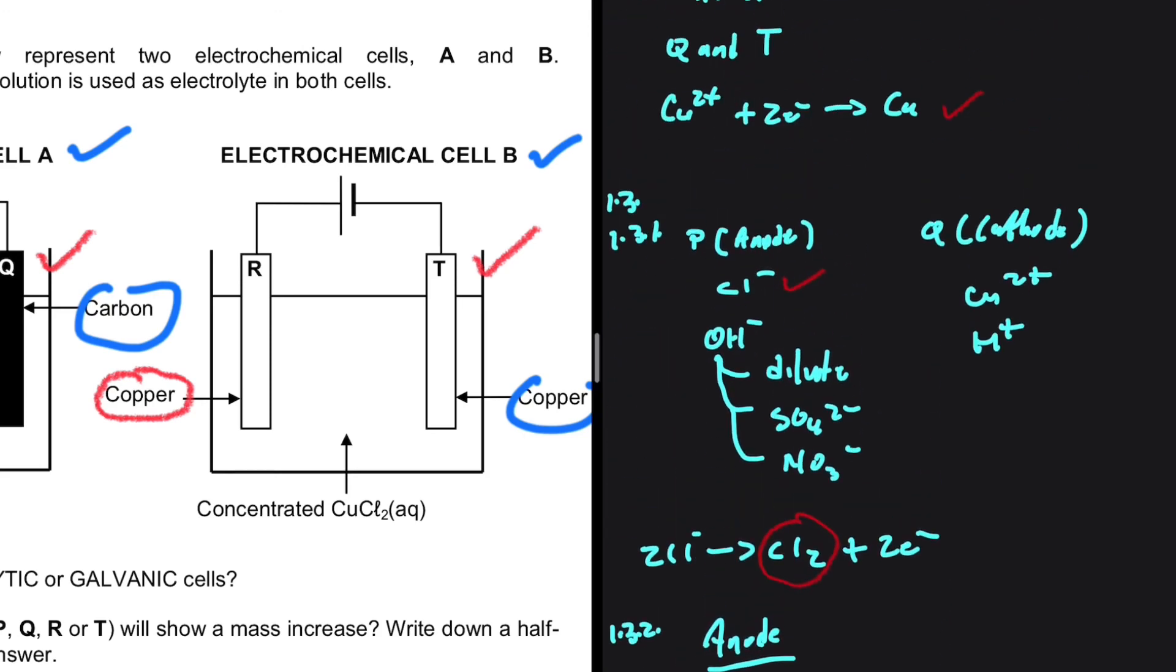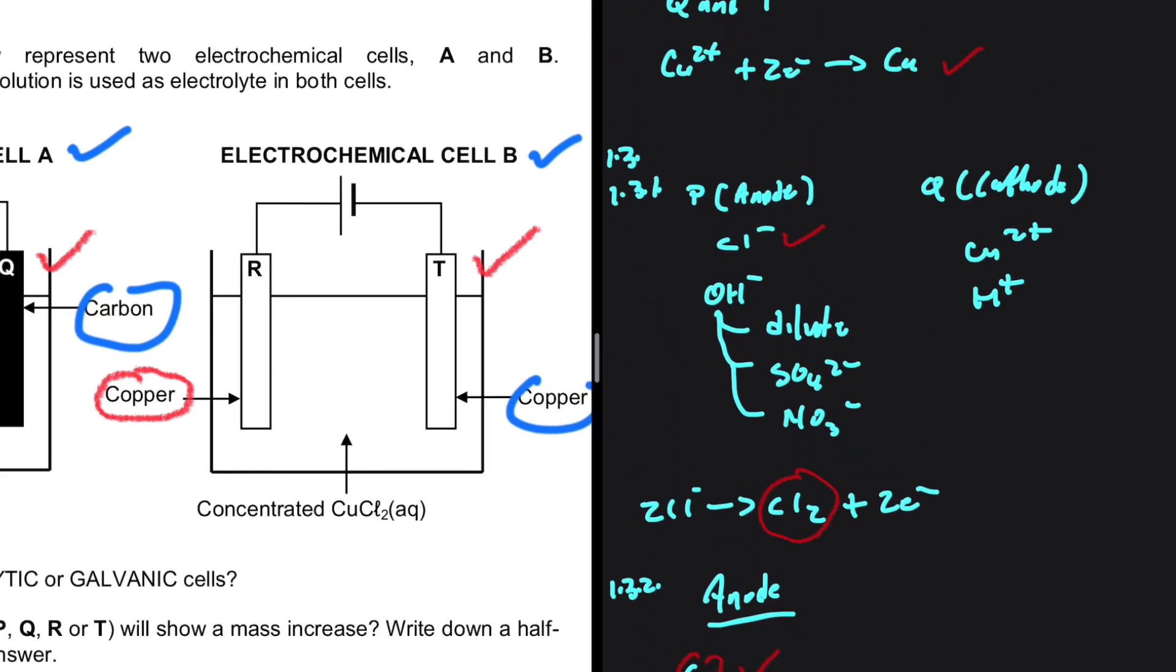Now I want us to go back to 1.3.1. If you look at 1.3.1, we talked about why Cl minus gets oxidized at the anode. Let's talk about the cathode. What will get reduced between Cu 2 plus and H plus? What is going to get reduced there? It's Cu 2+.